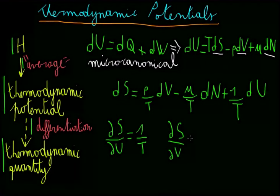Similarly, dS/dV is p over T, and dS/dN is minus mu over T.